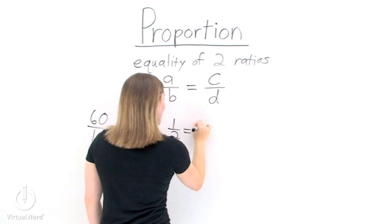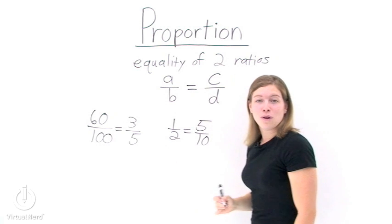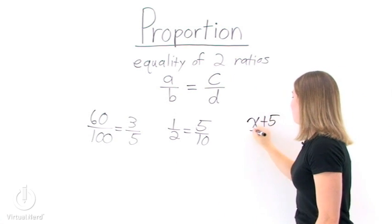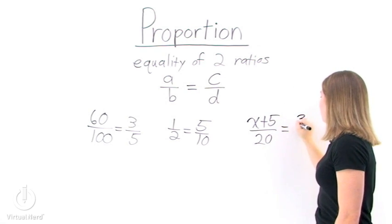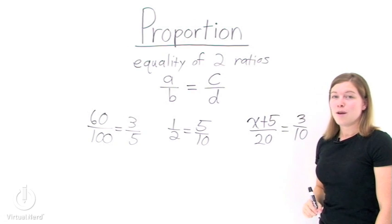Here's another. 1 half equals 5 over 10. And of course, we can add variables in proportions. So we can have x plus 5 over 20 is equal to 3 over 10. All of these are proportions because they're an equality of two ratios.